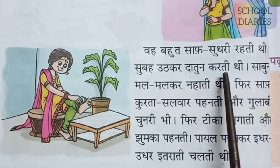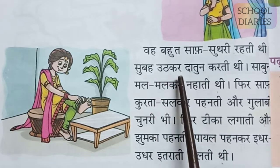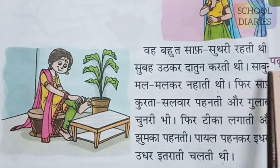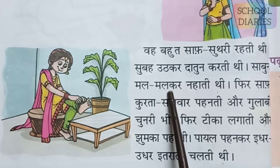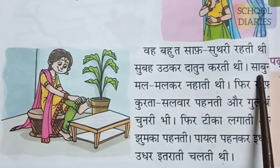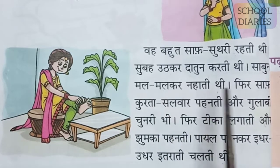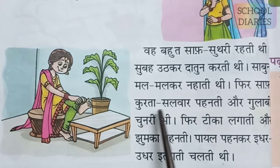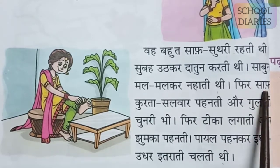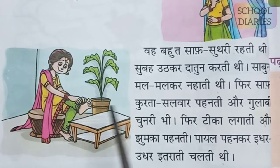Subha utkar datun karti thi — datun means brush, so she used to get up early in the morning and brush her teeth. Sabun mal mal kar nahati thi — sabun means soap, so she used to take a bath nicely with soap. Fir saf kurta salwar pehenti — after bathing, she used to wear a clean kurta salwar.